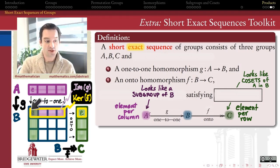So if we really are just kind of pushing these rows off to the right to form this projection of B onto C, then the kernel of this function will be the first row, because all of the elements in this first row are getting sent to the identity in C.